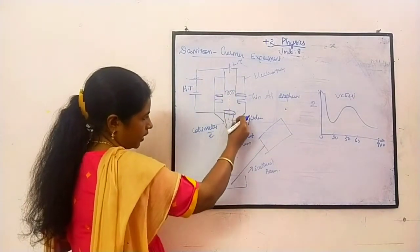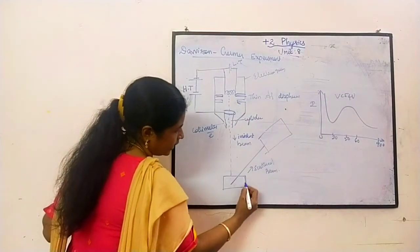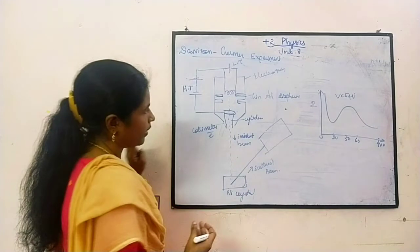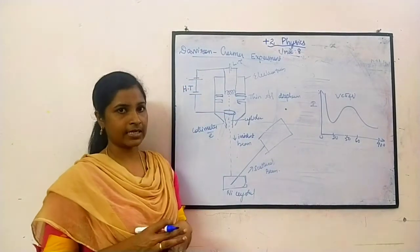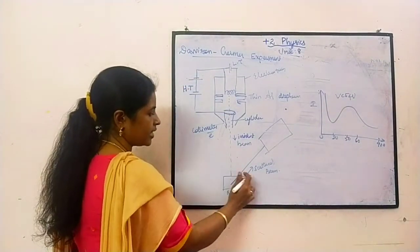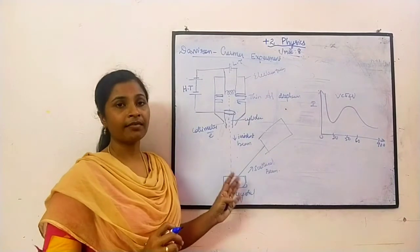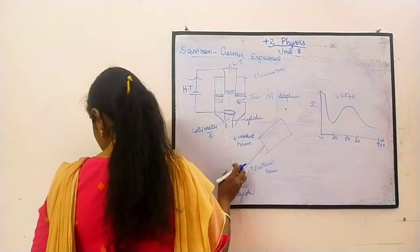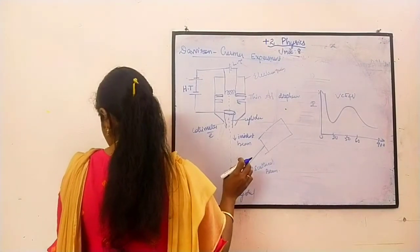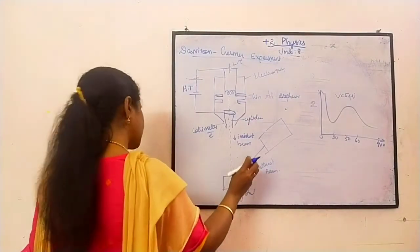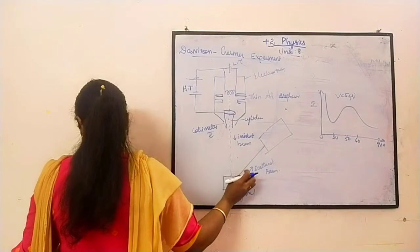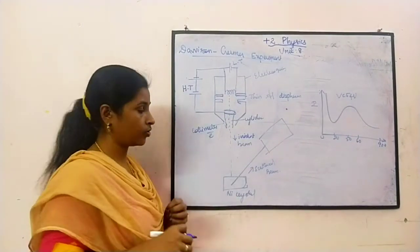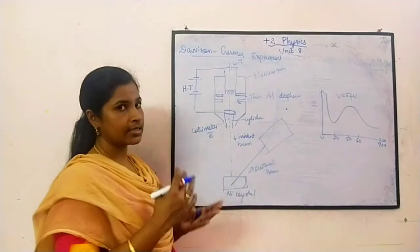So when the electrons are coming, there is a nickel crystal here where we will make the electron strike. So why we have selected this nickel crystal? In this nickel crystal, it is a heavy metal, and it is very difficult to displace the electrons. That is the structure.